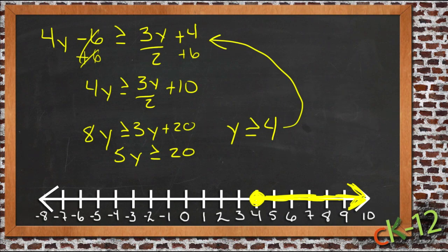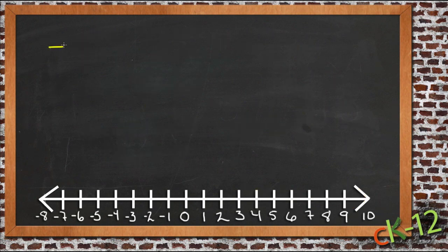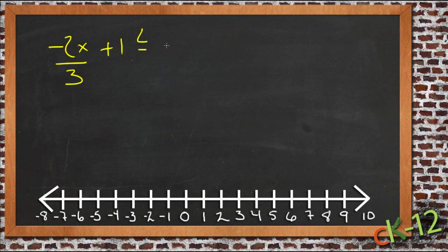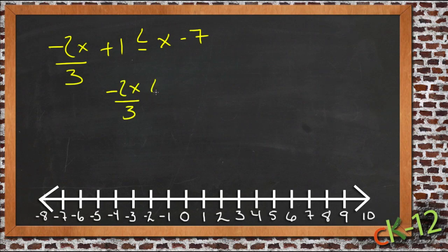Let's show one more example. Let's do negative 2x over 3 plus 1 is less than or equal to x minus 7. So first I'll combine my terms again. Get rid of our 1 from both sides. We'll have negative 2x over 3 less than or equal to x minus 8.